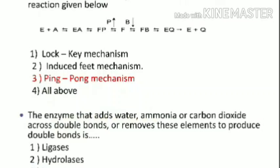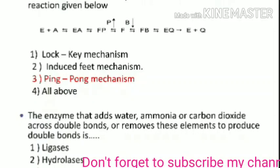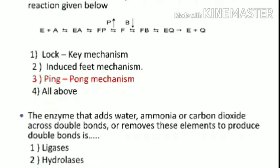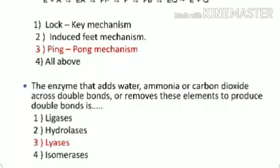Which mechanism of enzyme action is indicated in the reaction: E plus A forms an EA complex, which further forms F plus P, where P is the product but the enzyme is modified into F. This F enzyme further combines with the next substrate B forming an FB complex, releasing Q as a by-product and E as the free enzyme. So it is the double displacement mechanism, also called the ping pong mechanism — the correct answer is the third option.